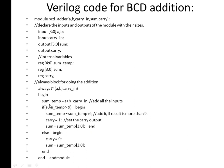Then else begin - that means if sum is not greater than 9, else begin: carry should be 0, and sum, whatever you are getting, that is your sum_temp bits 3 down to 0 is your answer sum. End, end. So that means if it is greater than 9 only, you have to add 6, else you have to pass as it is. That is the BCD addition Verilog code.